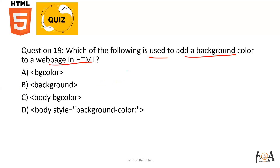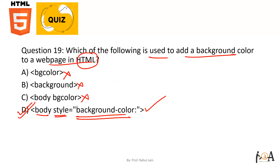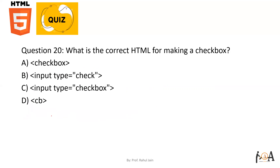Question number nineteen: which of the following is used to add a background color to a web page? Using HTML, we specify it as 'body style equals to background-color' — this is the correct way. 'bgcolor' is not a valid standalone HTML attribute; however, you can use it in CSS. In pure HTML, option D with the style attribute is the correct approach.